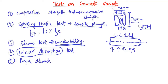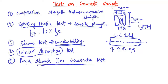The fifth test is the rapid chloride ion penetration test. This is performed to determine the concrete's resistance to chloride penetration, which is critical when a structure is exposed to chloride conditions such as icy or snowy environments where salt is present. If the concrete is weak against chloride penetration, it can degrade and cause the structure to fail earlier than designed. This test is essentially a durability test for concrete.